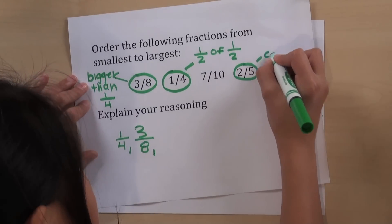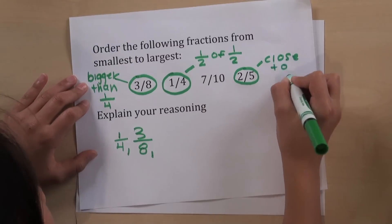They'll use various strategies for making these comparisons, such as using a benchmark fraction, like one-half.